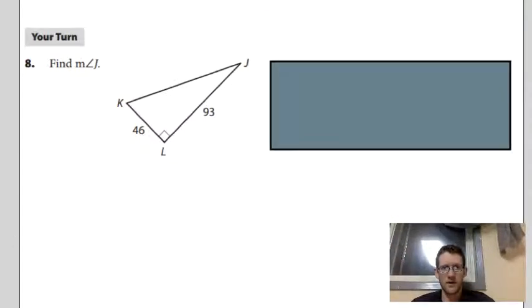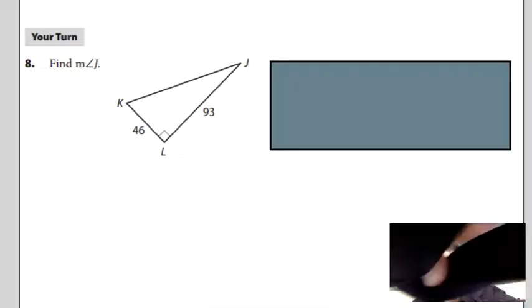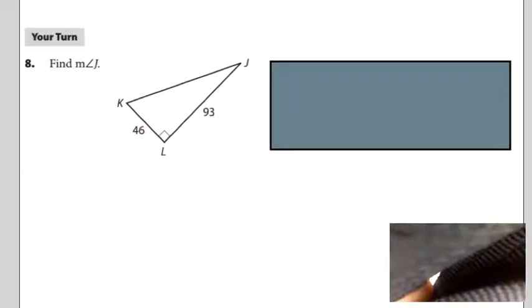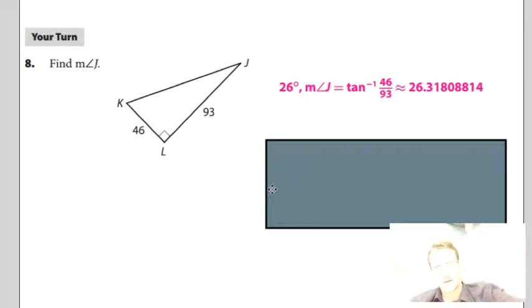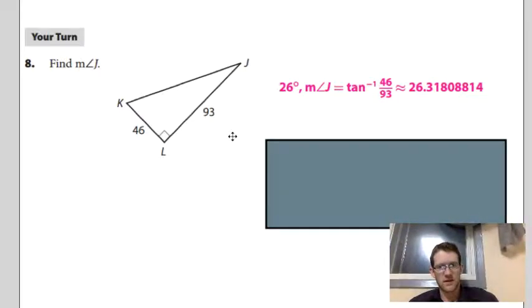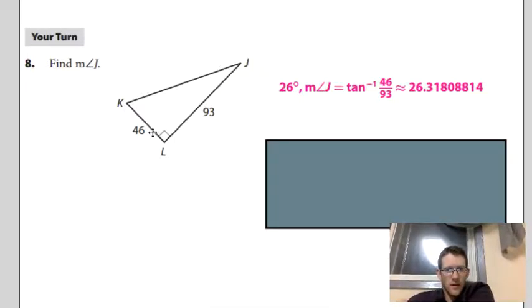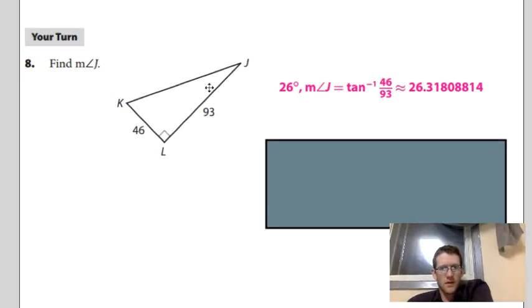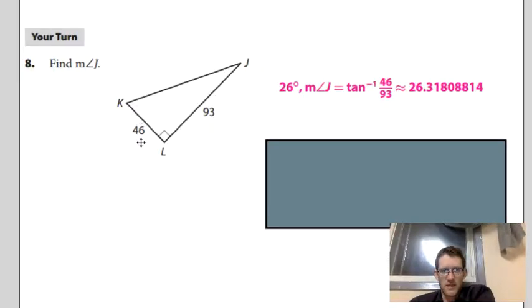Here's one more problem for you. I'll put another pause up. Pause. And, ta-da! If that's the answer you got, good job. But, the measure of angle J is right here. That is equal to, the tangent of angle J is equal to the opposite over adjacent. So, the inverse tangent of the opposite over adjacent is equal to angle J, which is 26.318.